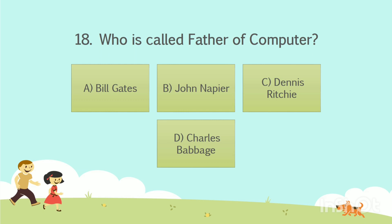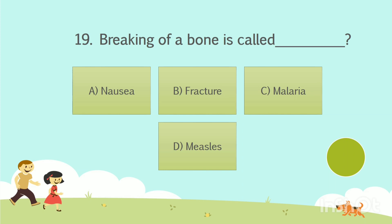The answer is Option D: Charles Babbage. Question number 19. Breaking of a bone is called dash. Option A: Nausea. Option B: Fracture. Option C: Malaria. Option D: Measles. Your time starts now.